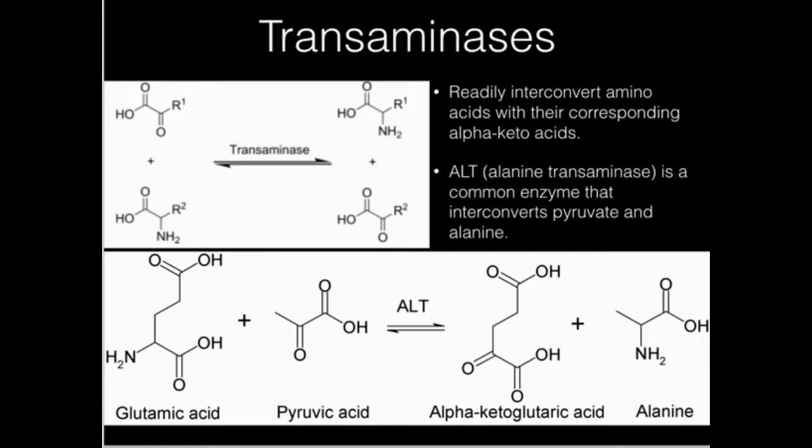That's interesting. And then pyruvate had a carbonyl here. It doesn't have a carbonyl anymore, it has an amine. So what a transaminase does is it interconverts amino acids and alpha-keto acids.